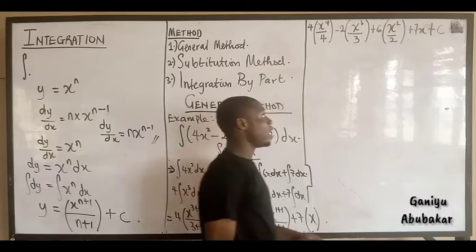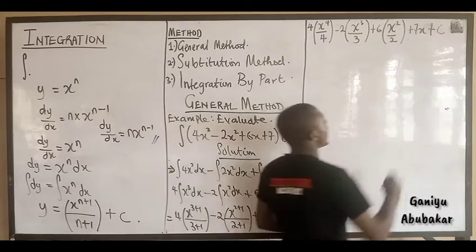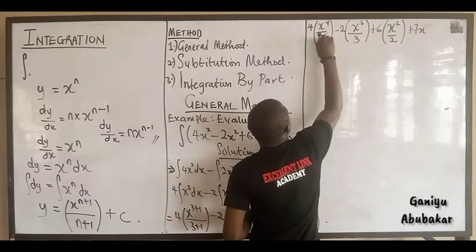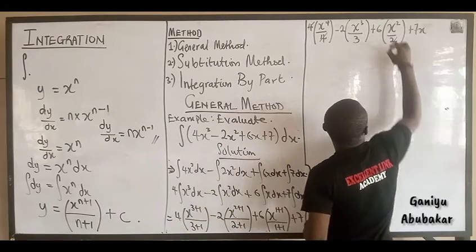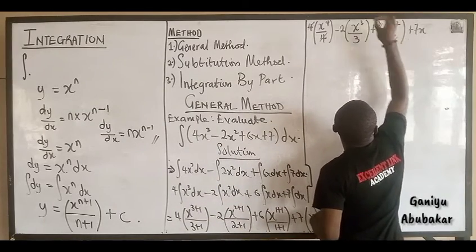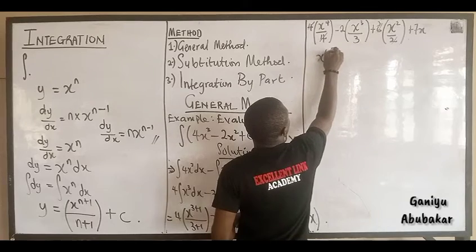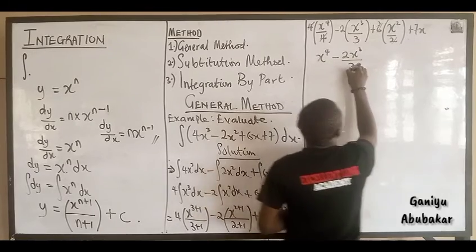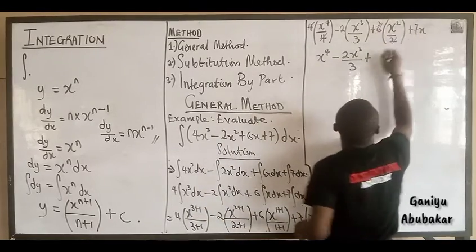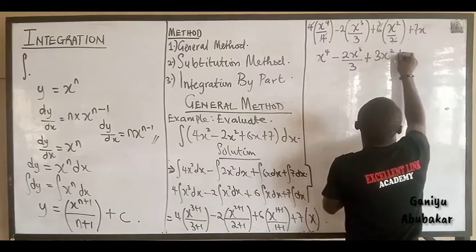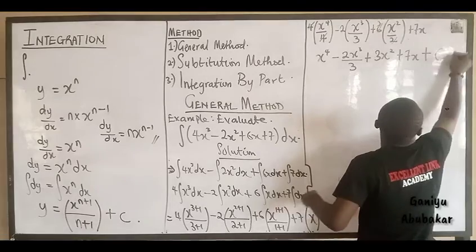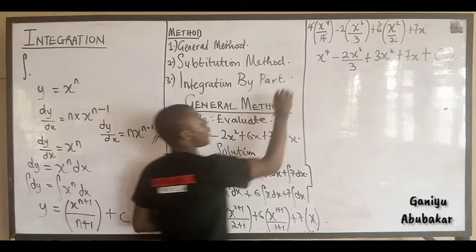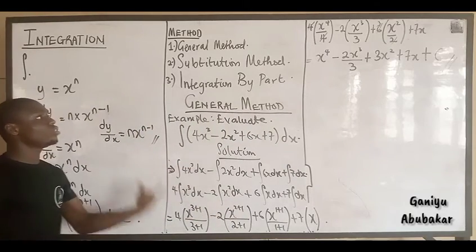Plus c is called the constant of integration. So our final answer is x to the power 4, minus 2x cubed over 3, plus 3x squared, plus 7x, plus c. This is how to solve this problem using the general method of integration.